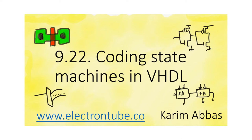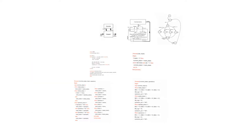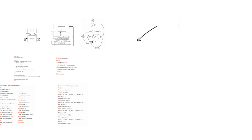Coding a finite state machine in VHDL requires a little bit of care to avoid creating unnecessary latches. In the previous video we talked about how to design finite state machines and determine the state transition diagram or table. In this video we're going to look at how to code the finite state machine. The way I will describe coding FSMs in VHDL is called the three-process approach, in which the FSM is coded using only three processes: the state update process, the next state process, and the output process.